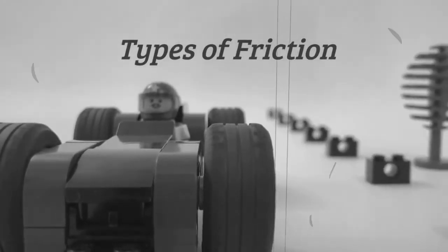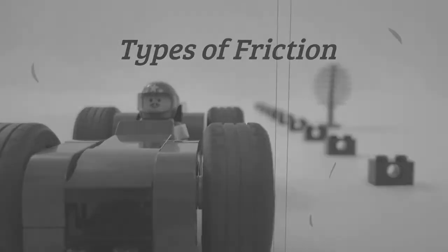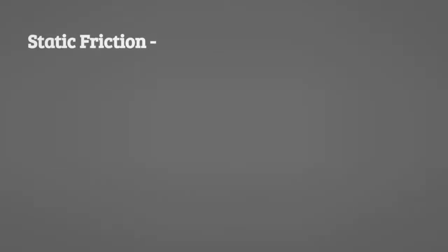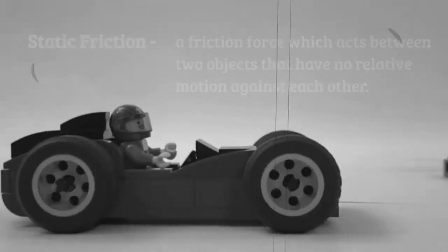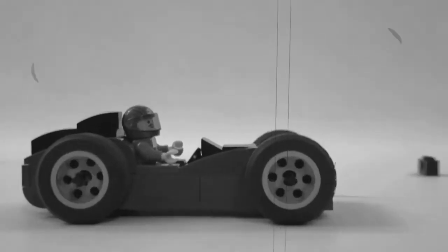Friction can be further broken down into two separate types of friction. First, we have static friction. Static friction is a force which acts between two objects which have no relative motion against each other. In short, friction exists when two objects are not sliding against each other, like when leisurely driving your car down the road.